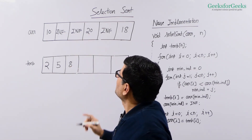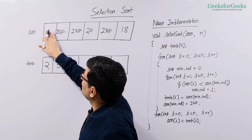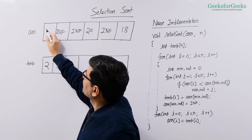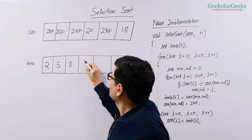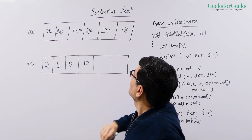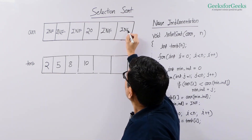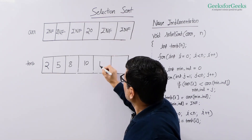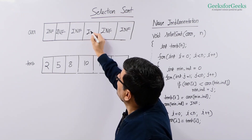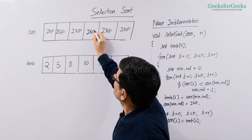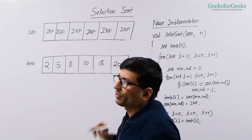The same thing we do for the remaining elements. Each time we find the minimum, we replace it with infinity and place it at the next position in the temporary array. After processing all elements, that's how we get the sorted array.